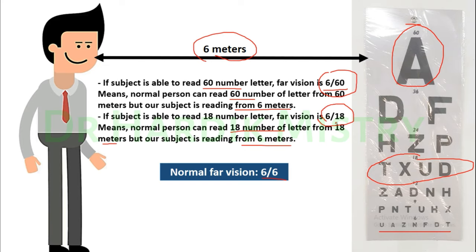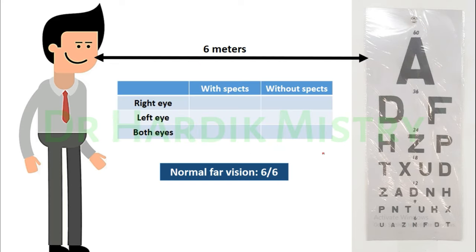Always write the result in the correct format: 6/60, 6/18, 6/12, 6/9, 6/6, etc. — do not try to divide these numbers. If the subject wears spectacles, take six readings: with specs and without specs for right eye, left eye, and both eyes. If the subject has no spectacles, take only three readings: right eye, left eye, and both eyes. Normal far vision is 6/6.